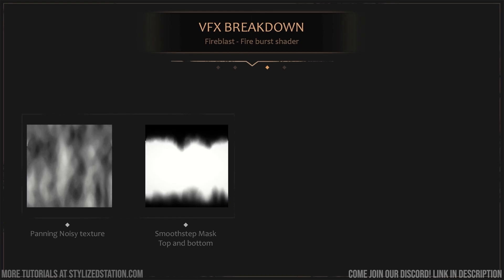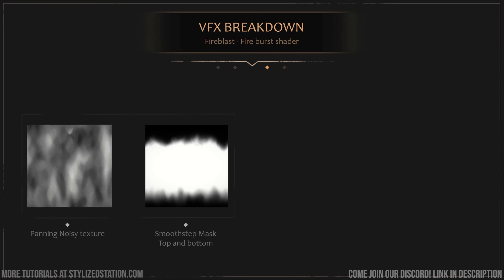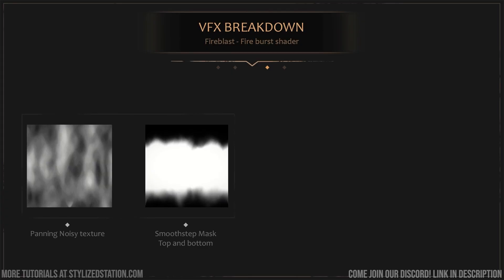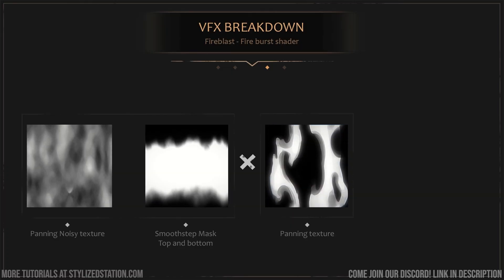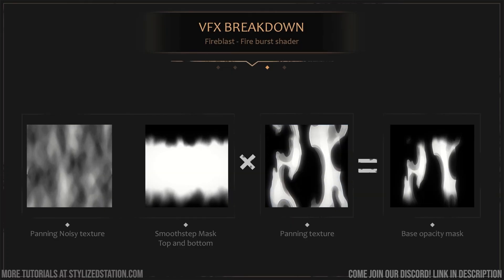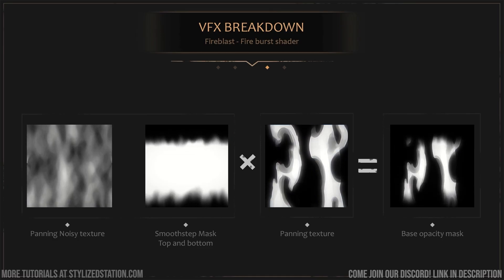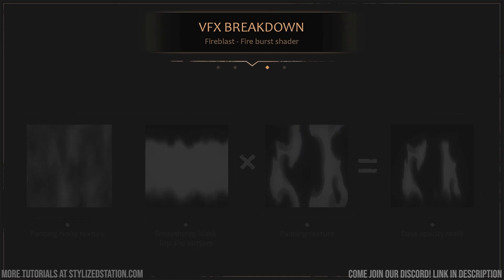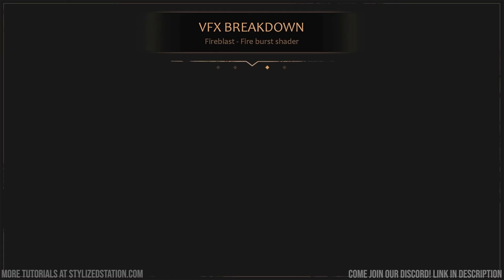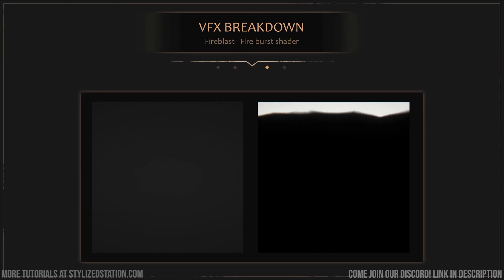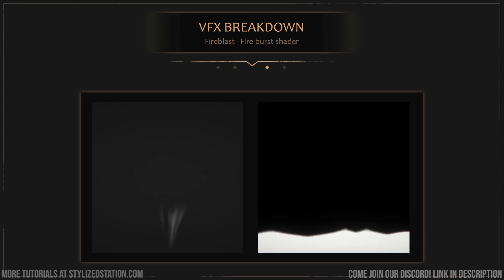We'll do this by taking our noisy texture and making it move. Then, thanks to the smooth step function, we make a mask of it. We multiply the result with our painting texture, and this gives us the base opacity mask for our mesh. If we add the opacity mask from the range indicator that we saw earlier on top of the passive one, this will allow us to simulate the burst part of the effect.